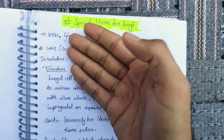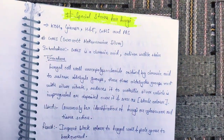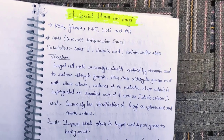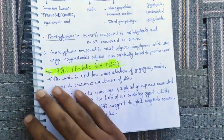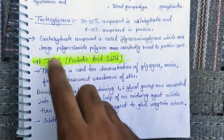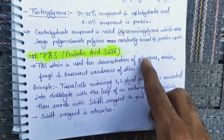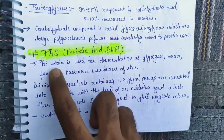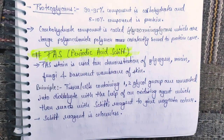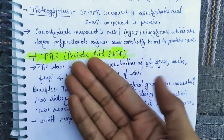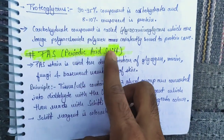First of all, PAS stain is very important for fungi, which we covered in the previous video. PAS stain is used for demonstration of glycogen, mucin, fungi, and basement membrane of skin. PAS stain stands for Periodic Acid Schiff.